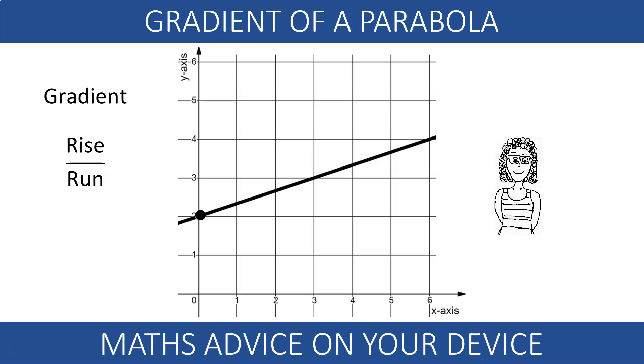In our previous videos, we have learned how to calculate the gradient of a straight line. Using the rise over the run, we can see that this line has gradient one-third.